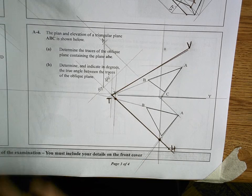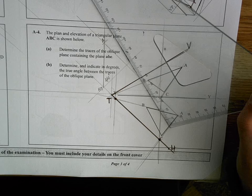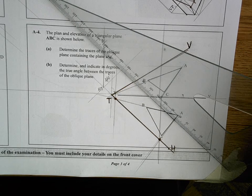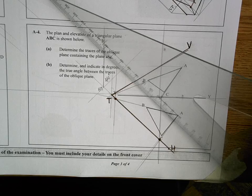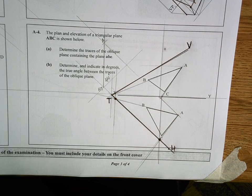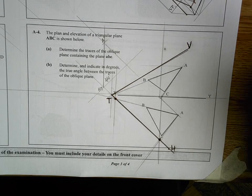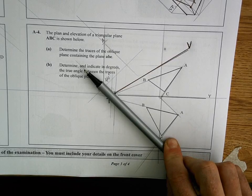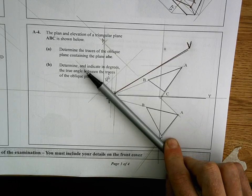So as you can appreciate, if you had a set square in front of you pointing away from you, that's what your traces are like at the minute. They're asking you to find the true angle between them. So what you would do is get an edge view of it. Now to get an edge view of it, we always look along the ground. The horizontal trace is on the ground. So we're going to look along the horizontal trace.